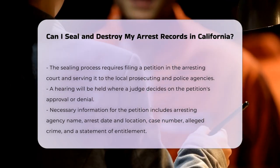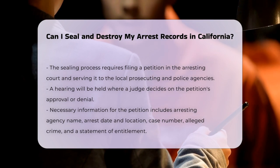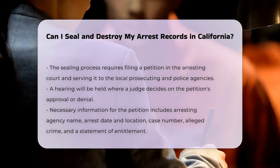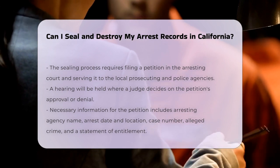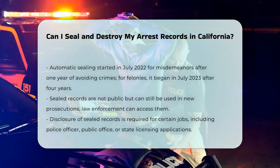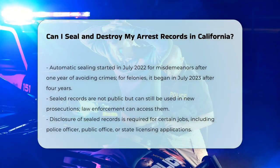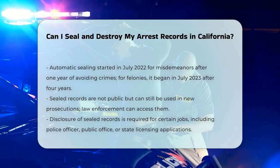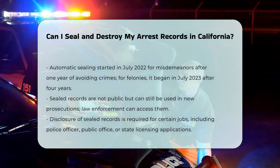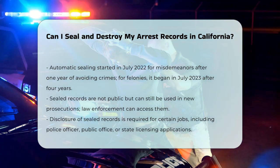Automatic sealing: since July 2022, California has been automatically sealing and destroying misdemeanor records for defendants who have avoided crimes for one year. For felonies, this process started in July 2023 for those who have avoided crimes for four years, excluding serious or violent felonies and sex offenders.